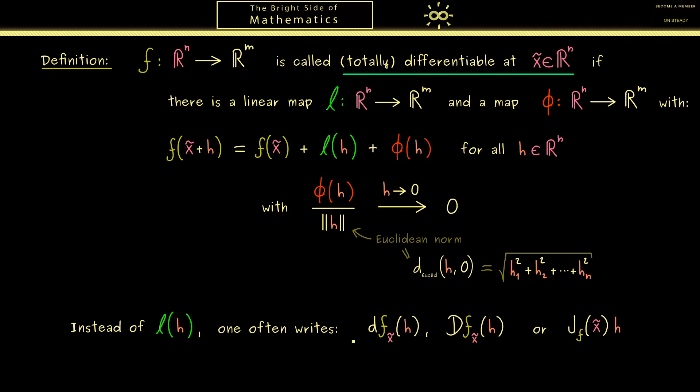Now all of these different notations could be used while defining total differentiability. However, in all cases we would call the linear map the total derivative of f at the point x tilde. Hence it's important to remember that now the derivative is not just a number but a whole linear map. And it makes sense if you think of the linear approximation as we have done it before. However, for the notations here I can tell you if you represent the linear map by a matrix, we call jf the Jacobian matrix of f. This is a special name you should remember and we will talk about this in more detail later.